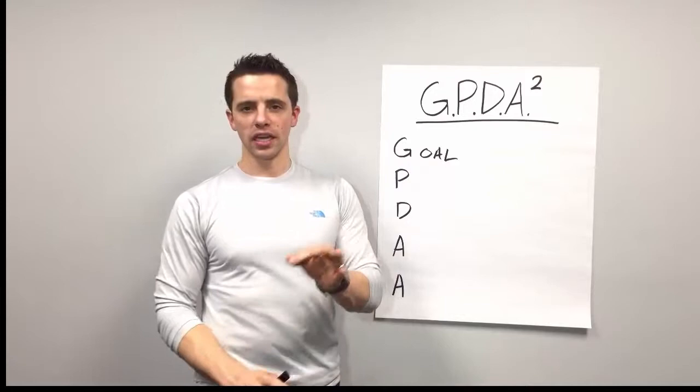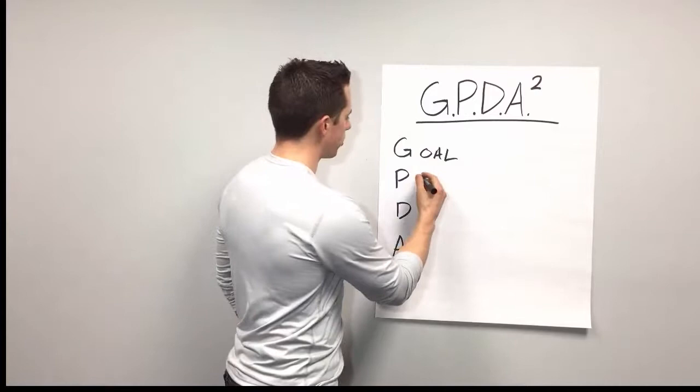So decide what your goal is, have a target to aim at. Why do you want to accomplish it as a second layer? The second part of the GPDA squared process is the plan.